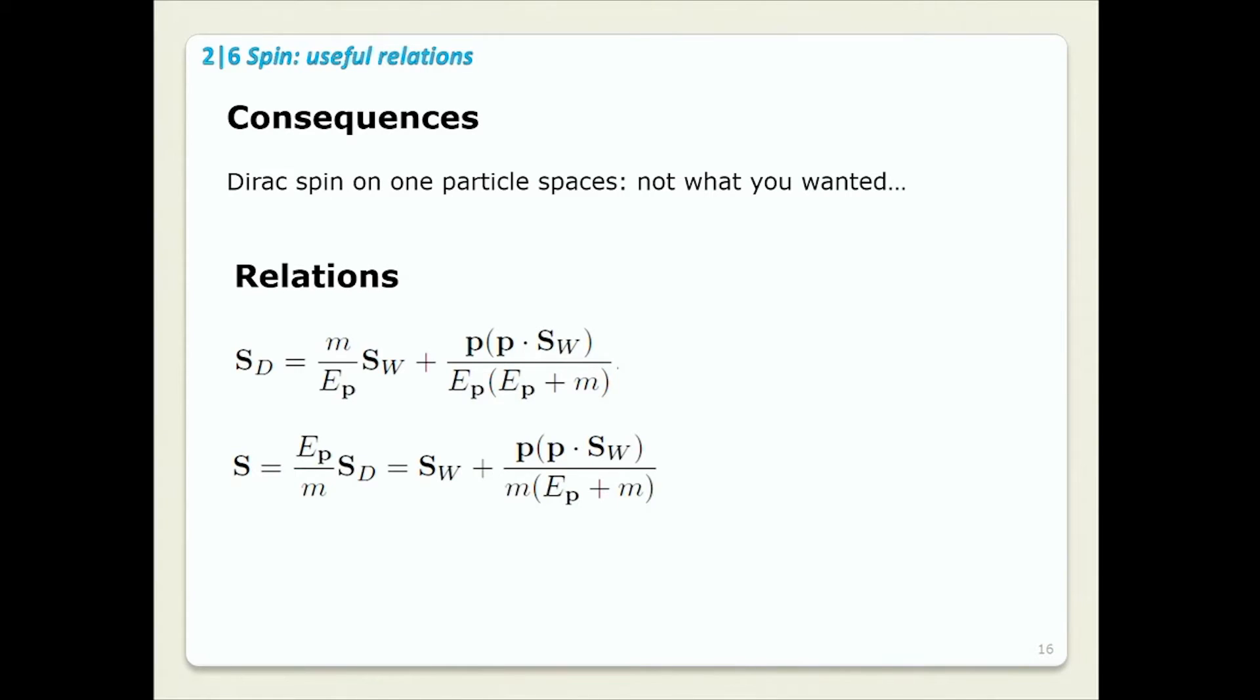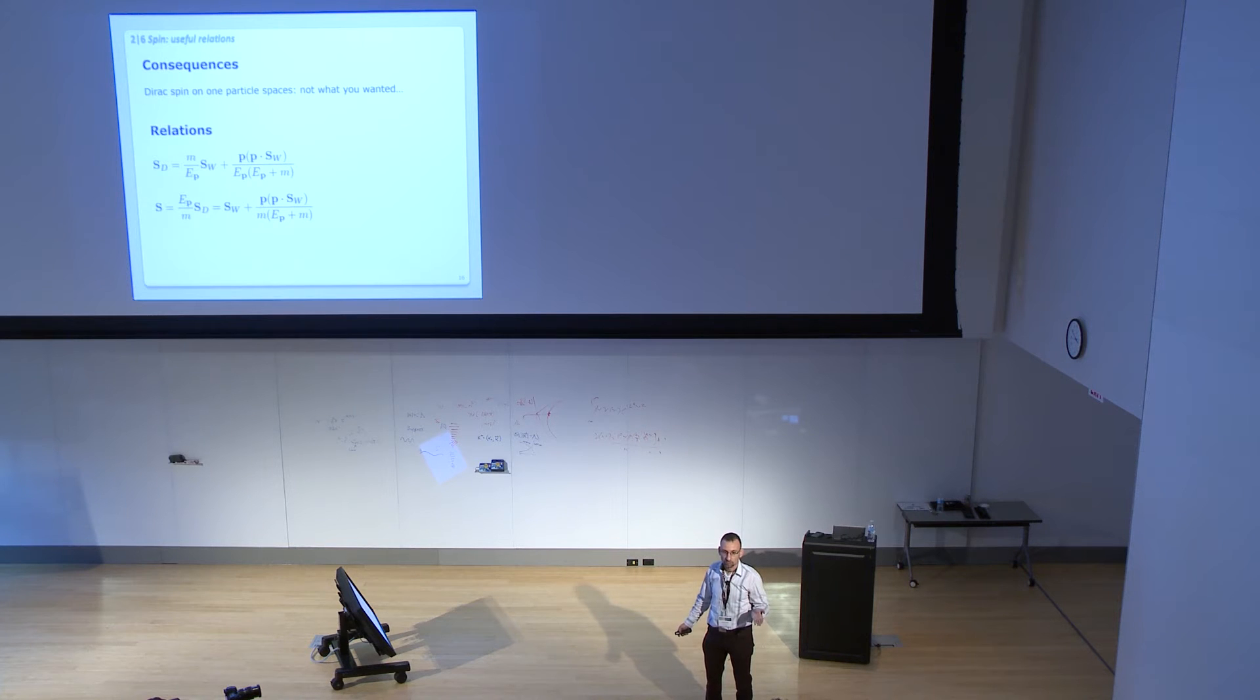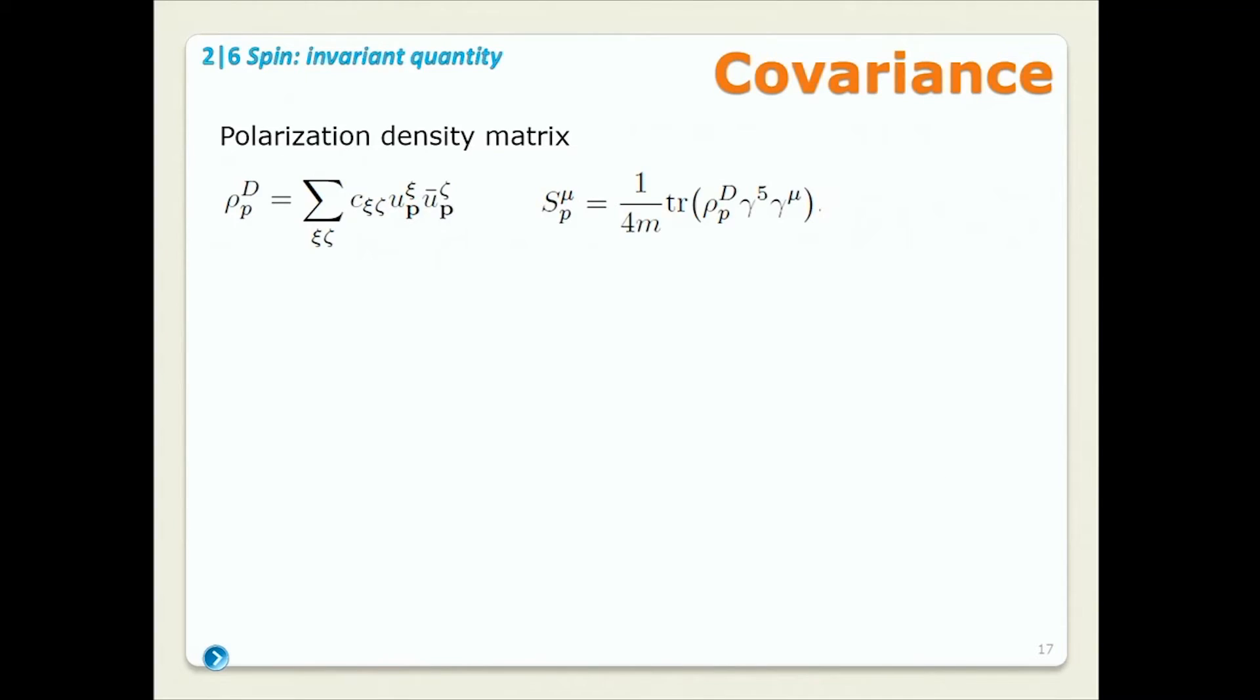Going to one particle state kills some of the properties. Dirac spins commute in a standard way. Once you reduce them as operators on one particle Hilbert space, they don't. You lose nice properties of eigenvalues and so on. But again, whether it's good enough or bad enough to call it spin operator or not to call it spin operator, it's more matter of taste than anything else.